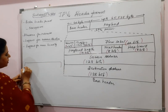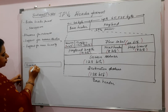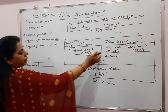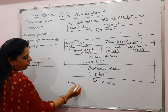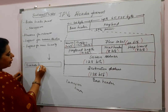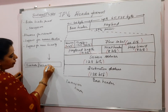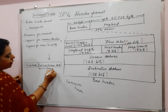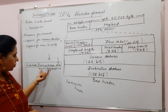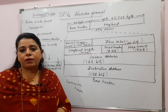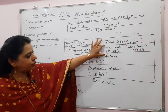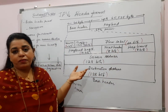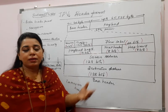The payload consists of the extension headers and the data from the upper layer. So depending on the requirement, only the needed options are included in the payload part of the packet. For example, if you need extension header 1 and extension header 2, those are included, then the data follows. This becomes a separate topic on IPv6 packet format, and I will explain the different extension headers in the next session.